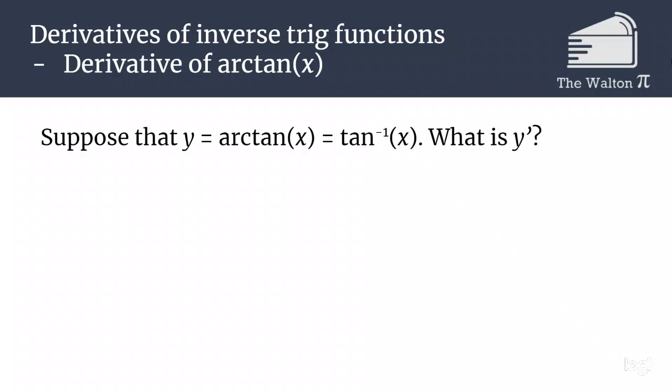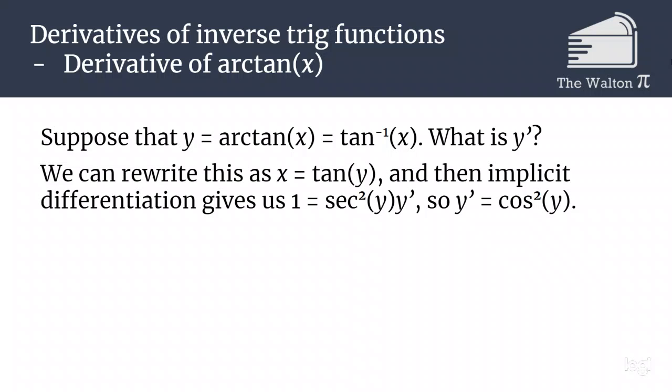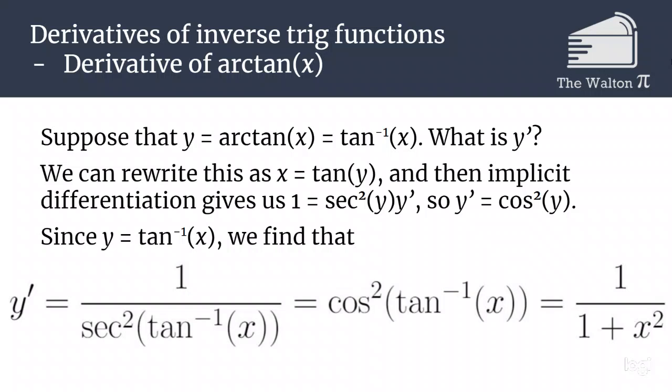If we do the same thing with tangent, we get 1 equals secant squared of y times y prime after implicit differentiation. So y prime is cosine squared of y. Since y is inverse tangent of x, we can plug everything through and find that the derivative of arc tangent of x is 1 over 1 plus x squared.